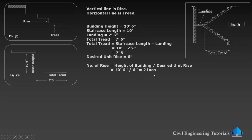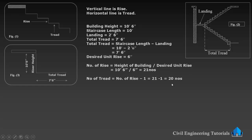10 feet 6 inches divided by 6 inches gives us 21 numbers of risers. Now we have to calculate the number of treads. The number of treads equals number of risers minus 1. So 21 minus 1 gives us 20 numbers of treads.